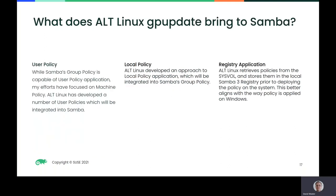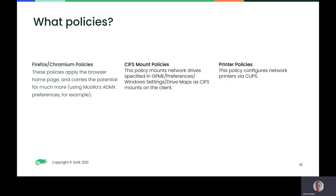So what does the Alt-Linux GP update code bring to Samba? While Samba's group policy is capable of user policy application, my efforts have focused on machine policy. Alt-Linux has developed a number of user policies which will be integrated into Samba, as well as an approach to local policy application. Alt-Linux retrieves policies from the SysVol and stores them in the local Samba 3 registry prior to deploying the policy, which better aligns with the way policy is applied on Windows. Policies being integrated include Firefox and Chromium policies applying the browser homepage, CIFS mount policies mounting network drives as CIFS mounts on the client, and printer policies configuring network printers via CUPS. There is also a mechanism for disabling the Alt-Linux policies using the Alt-Linux ADMX templates, which may be necessary if some policies are intended to only be applied to Windows clients.